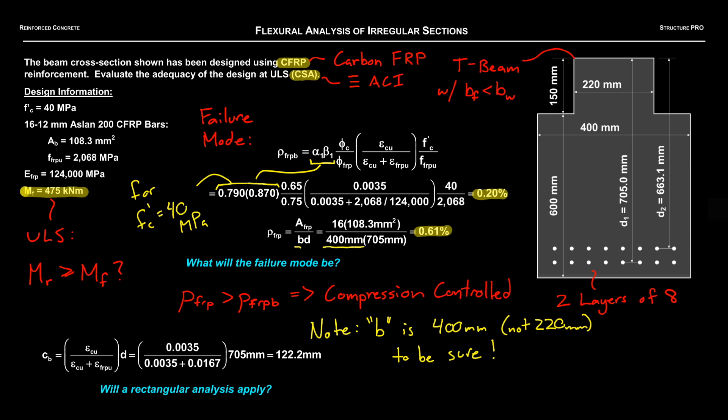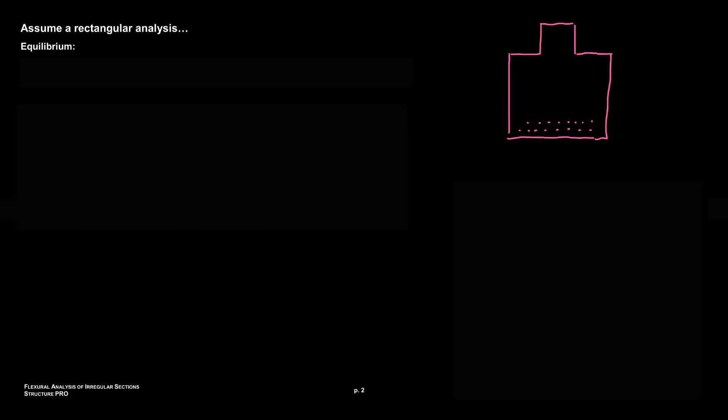Alright, so the next logical question is will a rectangular analysis apply? But the truth is we don't know. Our balanced neutral axis here is 122.2 which is less than HF, so it's less than 150, so that's a good sign. But because our actual neutral axis is going to be greater than CB we don't know. So if we're not sure if a rectangular analysis will apply, the best thing to do is assume that it will and carry on. So let's assume that A, this depth of the stress block, is less than 150.